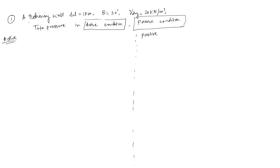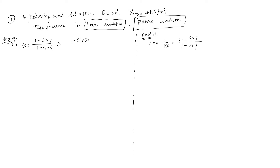In the active case, find the value of Kₐ, and in the passive case, find K_p. Remember: Kₐ equals (1 minus sin phi) divided by (1 plus sin phi), and K_p equals (1 plus sin phi) divided by (1 minus sin phi). Putting in phi equals 30 degrees: Kₐ equals (1 minus 1/2) divided by (1 plus 1/2), which equals 1/3. And therefore K_p equals 3.